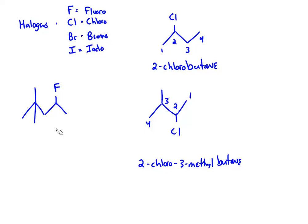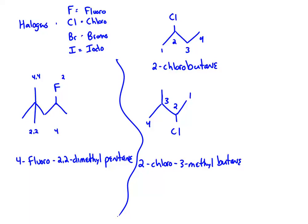Here's a tricky one. If I number toward the fluorine, I get positions 2, 4, and 4. But if I number the other way, I get 2, 2, and 4 for the locations. So remember: lowest set of numbers. When I write it, I call it 4-fluoro-2,2-dimethylpentane. The numbers give the smallest set, and alphabetically 4-fluoro comes before dimethyl.